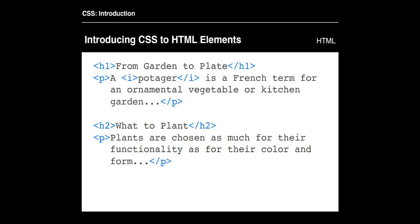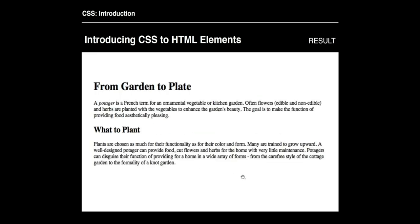Here we have our HTML elements: a header at the top, a paragraph with some italic values inside, a subheader, and then another paragraph. This is what it would look like if you rendered that in the browser window without any CSS attached to it.